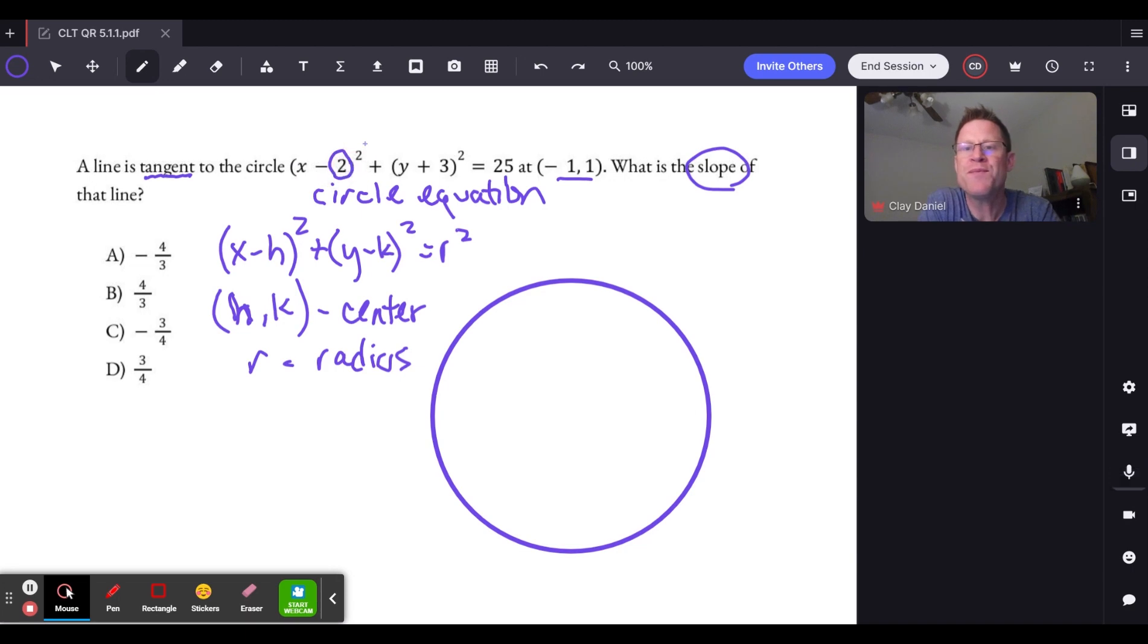That actually means this 2 is a positive value. x minus h, x plus 3—that means that 3 is a negative value, and we can assess the center of the circle as being at the point 2, negative 3.